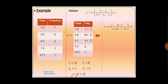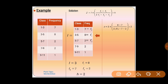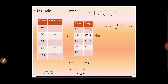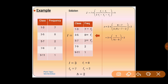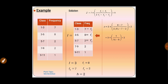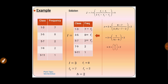Now we simplify. In the numerator: 8 − 7 = 1. In the denominator: 2×8 = 16, and 16 − 7 − 2 = 16 − 9 = 7. So the equation becomes Z = 3 + (1/7) × 2. Multiplying the numerator: 1 × 2 = 2. So Z = 3 + 2/7.